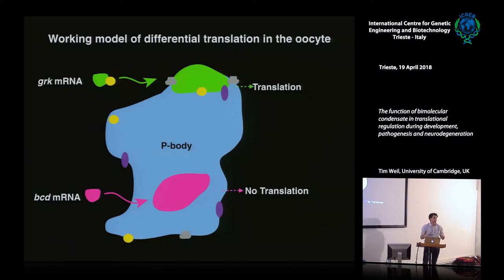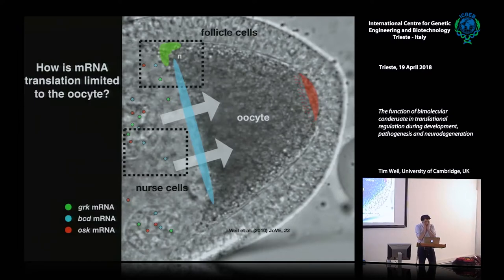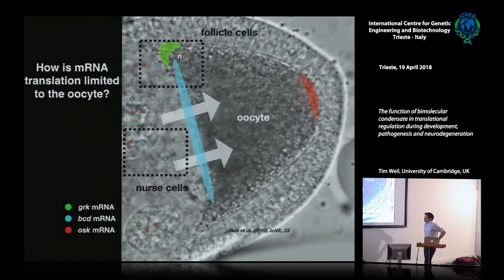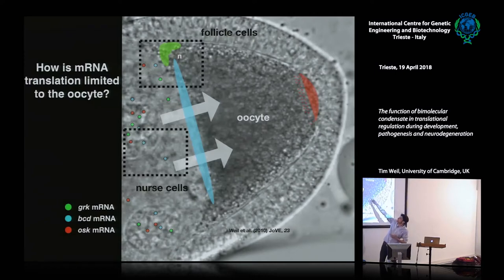This work resulted in a model: you can take Bicoid RNA, store it inside a P body at the anterior, and keep it off. Simultaneously, Gurken RNA in a similar P body localizes to the edge, where key translation-activating factors are present. Analyzing core versus edge of P bodies, we showed RNAs at the edge can associate with ribosomes and be translated. This got us thinking about what limits translation within the nurse cells — how are these RNAs kept off before reaching their destination?